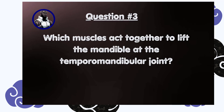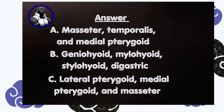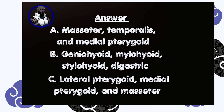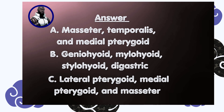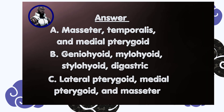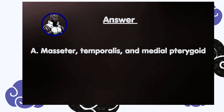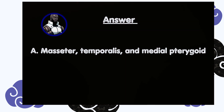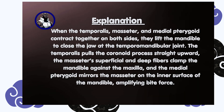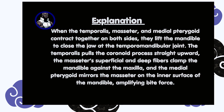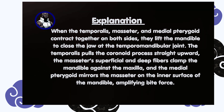Question number three: which muscles act together to lift the mandible at the temporomandibular joint? A) Masseter, temporalis, and medial pterygoid, B) Geniohyoid, mylohyoid, stylohyoid, digastric, C) Lateral pterygoid, medial pterygoid, and masseter. Answer is A, masseter, temporalis, and medial pterygoid. When the temporalis, masseter, and medial pterygoid contract together on both sides, they lift the mandible to close the jaw at the temporomandibular joint.